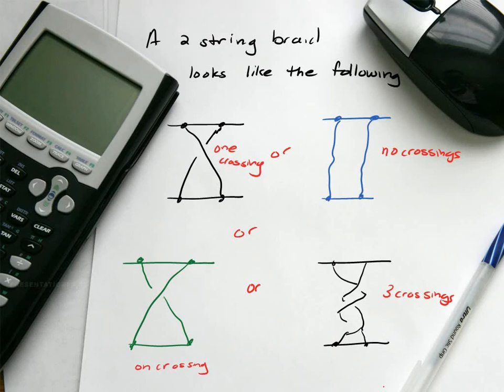So again - one crossing, no crossings, another one crossing, and three crossings. Different kinds of two-string braids as an example.